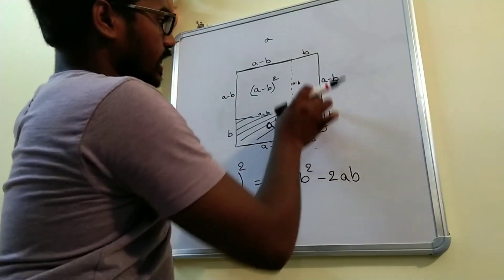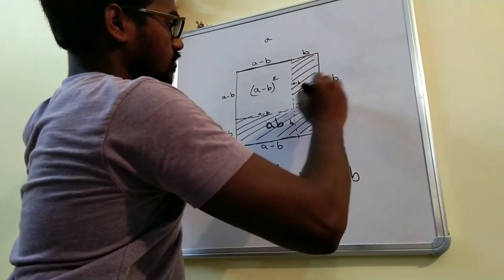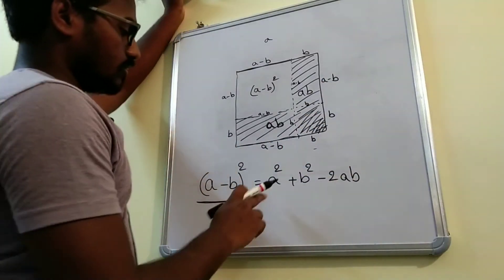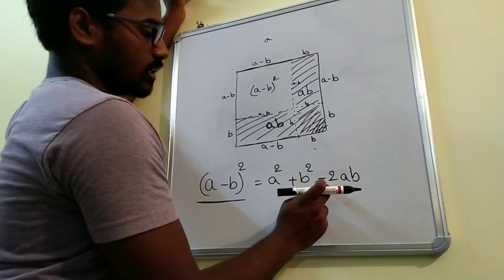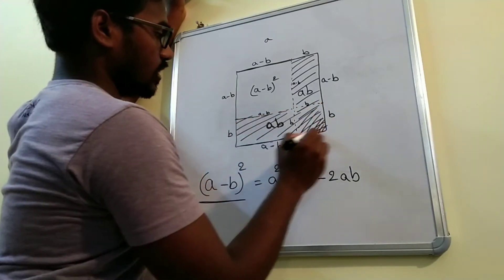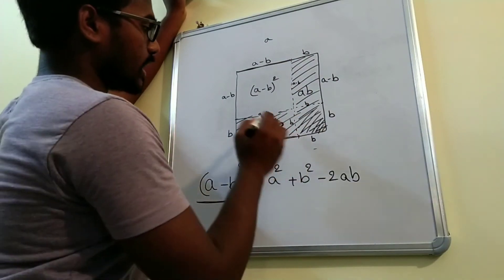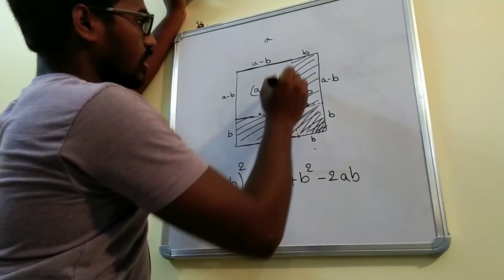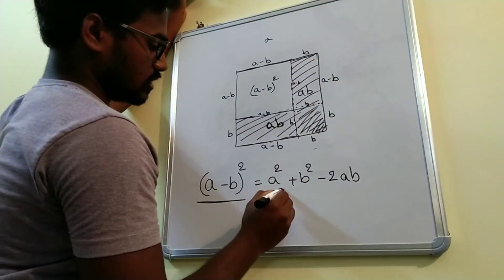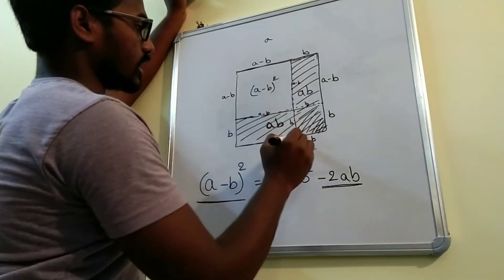What will the area of this whole rectangle be? It is again a times b. So as you observe, we have minus 2ab. From a square, we are subtracting 2 times ab. That is 1ab is this area and 1ab is this area. a square is the full area. From the full area, we are subtracting this area and this area — that is minus 2ab. So a square is the whole area and minus 2ab is subtracting these two rectangles.